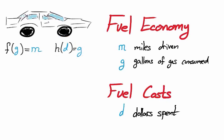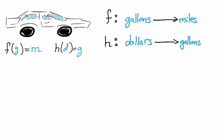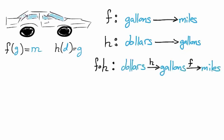How would we describe the cost of driving? How do we connect the number of miles driven to the number of dollars spent? Well, we have two functions, h with an input of dollars and an output of gallons, and f with an input of gallons and an output of miles driven. We can link the functions together through composition. We take the composition f of h to represent the cost of driving.